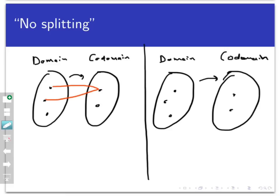This sort of behavior is okay. But we cannot have any splitting, that is, where one point in the domain maps to different points in the codomain. That is not okay.